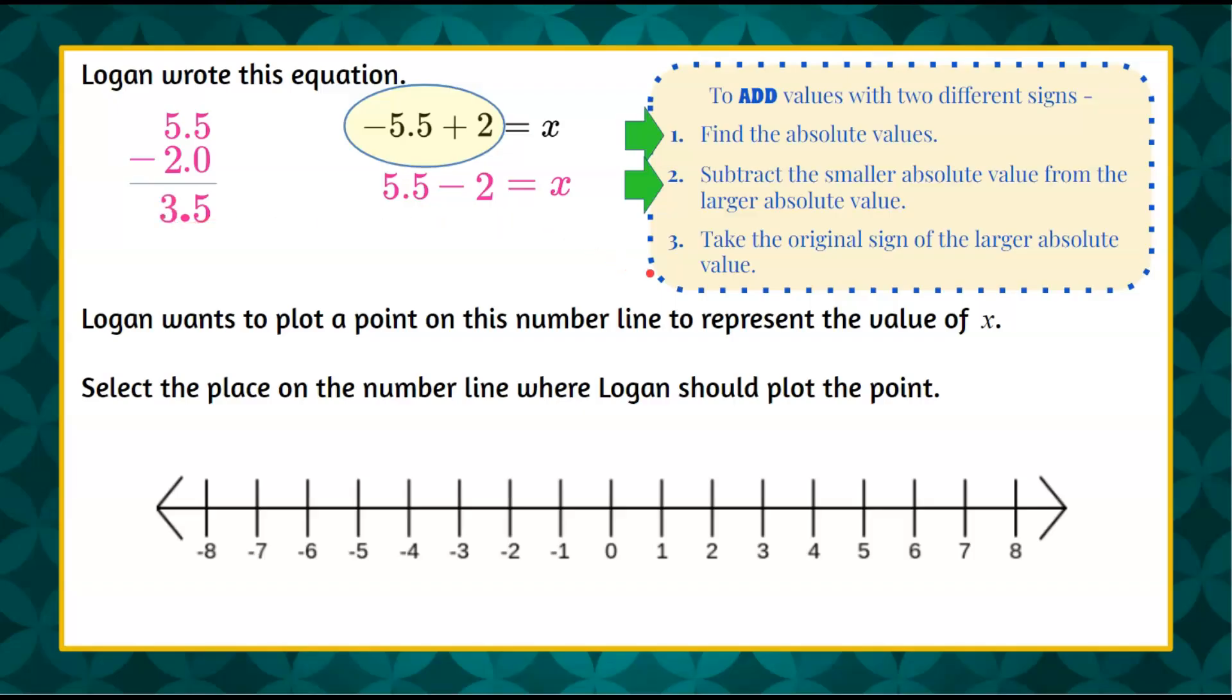Then step 3 says to take the original sign of the larger absolute value. So the larger absolute value was 5.5, and its original sign was negative. So that means x is equal to negative 3.5.